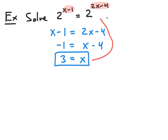Notice that if we substitute x equals 3 back into the equation, we get 2 to the 3 minus 1, which is 2 squared, or 4, on the left-hand side. And on the right-hand side, we get 2 to the 2 times 3 minus 4, which is 2 to the 6 minus 4, which is 2 squared, also 4. So we do get the same number on both sides, verifying that x equals 3 is a solution.